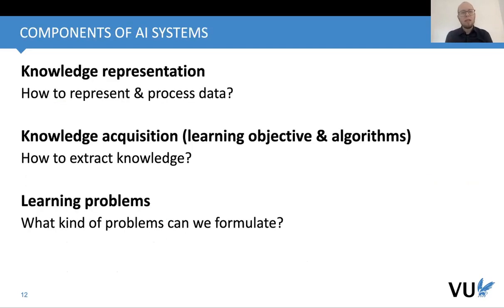In general, what we can say about AI systems: we need to figure out how we represent knowledge, because knowledge representation will determine how we process data — for instance, using a graph or matrices. Another thing is knowledge acquisition: what is the learning objective and what algorithms we use to extract knowledge. And finally, we should say what kind of learning problems we have. These three things together are the foundations of AI systems.